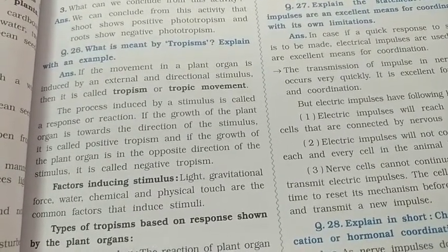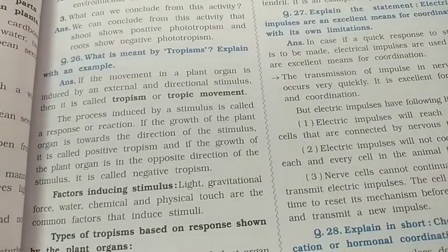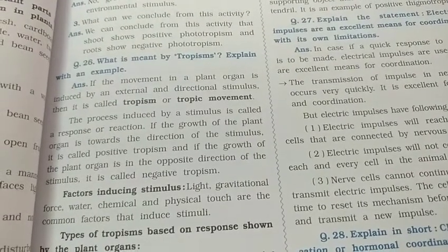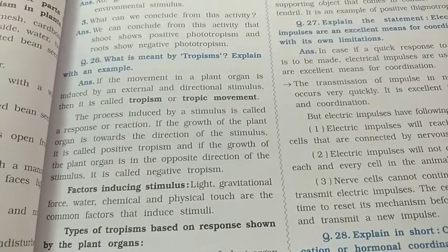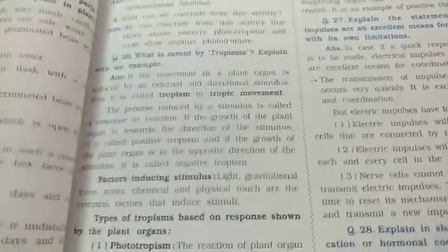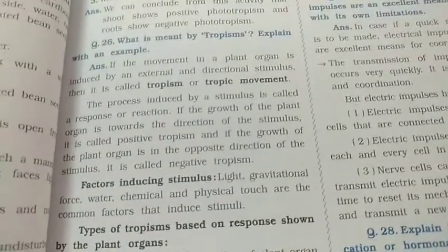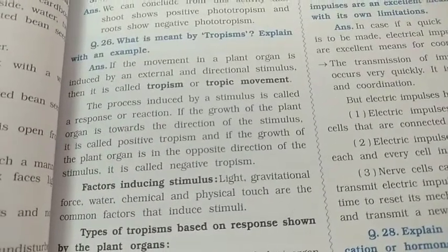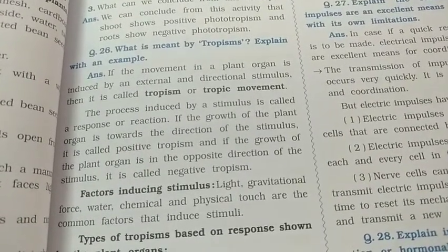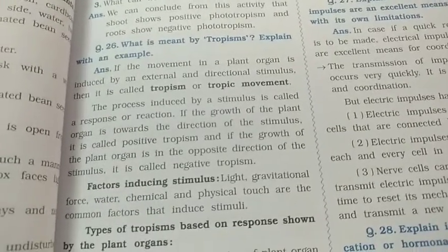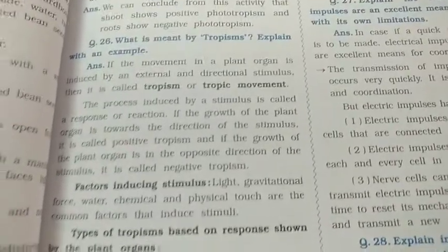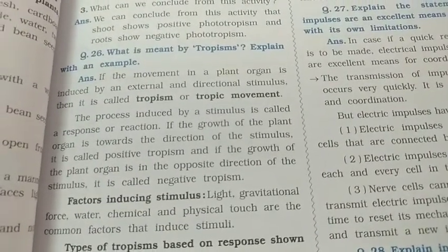The process induced by a stimulus is called a response or reaction. If the growth of the plant organ is towards the direction of the stimulus, it is called positive tropism. If the growth of the plant organ is in the opposite direction of the stimulus, it is called negative tropism.